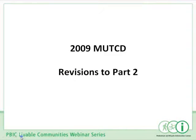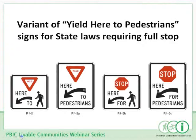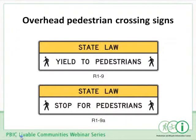We're going to go part by part about the changes affecting pedestrians and bicyclists. First, there's a new 'Stop Here for Pedestrians' sign. The 'Yield Here to Pedestrians' sign was in the 2003 edition. The 'Stop Here for Pedestrians' sign was added because some states have laws requiring motorists to come to a complete stop rather than simply yield to pedestrians in a crosswalk.